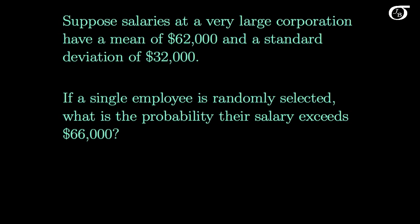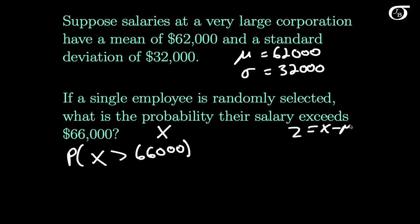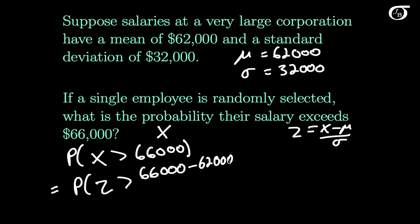To illustrate how this might help us in a probability calculation, consider this scenario. Suppose salaries at a very large corporation have a mean of 62,000 and a standard deviation of 32,000. If X is the salary of a randomly selected employee, we might want to know the probability that X is bigger than 66,000. It might be tempting to standardize: X minus mu over sigma, giving the probability that Z is bigger than (66,000 minus 62,000) over 32,000, which equals the probability that Z is bigger than 0.125.